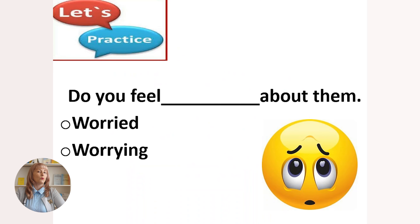Let's practice together. Sentence number one: 'Do you feel worried or worrying about them?' Pause and write the word. Ready? The answer is: 'Do you feel worried about them' — we speak about a feeling.